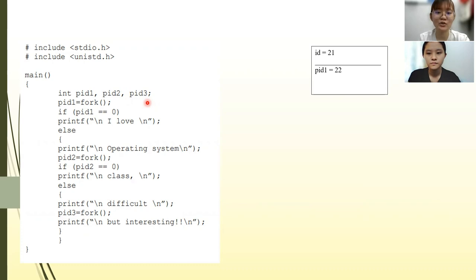Hence, at ID equals to 22, PID1 equals to 0, which means child process is created. Then it enters the if-else condition.